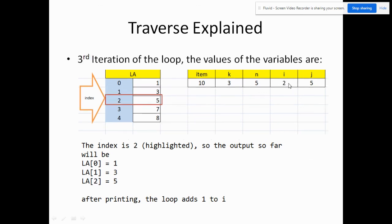I now becomes 2. And since i is 2, we'll be pointing now to LA indexed by 2. The output will be LA 2 equal to 5. And then again, add one to loop.